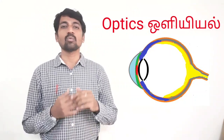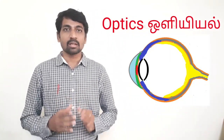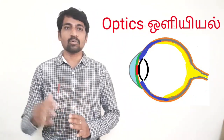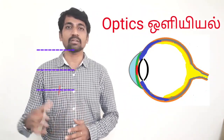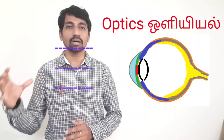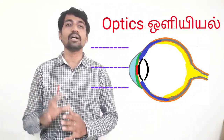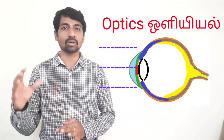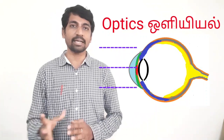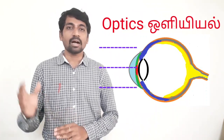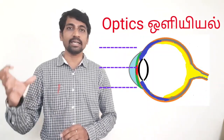Now the working of the eye: light rays enter through the cornea, which is the front transparent part of the eye. The cornea acts as a refractive surface, bending the light as it enters.